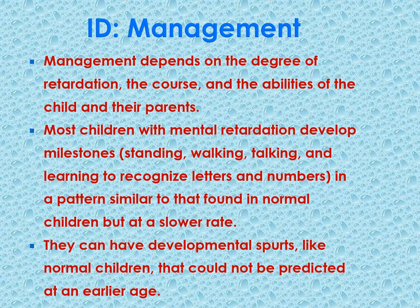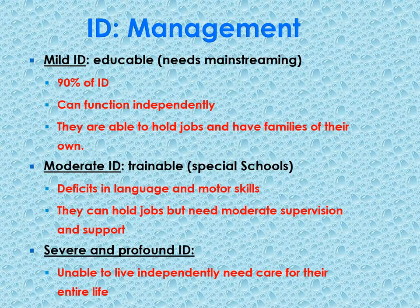Management depends on the degree of impairment. Most of these children can develop milestones such as standing, walking, and talking, but at a slower rate than normal children. They can have developmental spurts, but these cannot always be predicted at an earlier age. Mild intellectual disability comprises the majority — 90% of cases. These children can function independently. They need mainstreaming — involvement with normal children — and are able to hold jobs and have families of their own with a little more assistance than others.